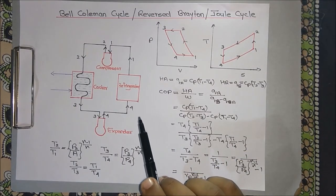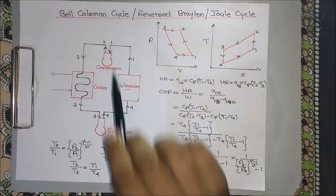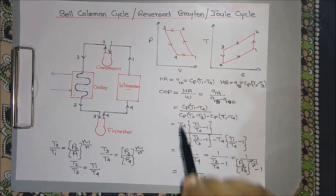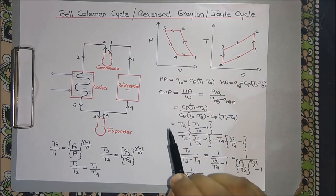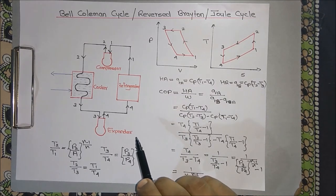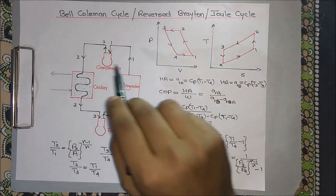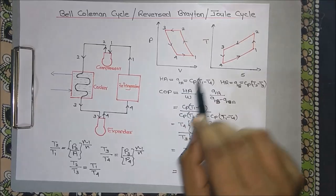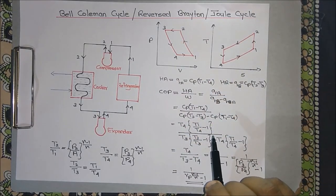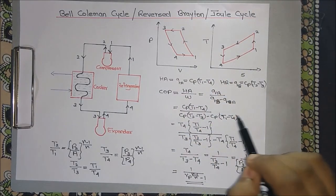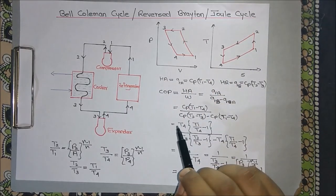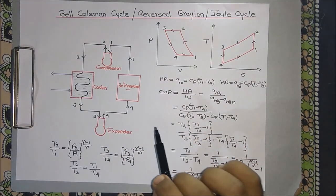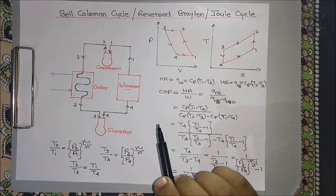Hello guys, today I am going to explain the Bell-Coleman cycle, also known as the reverse Brayton cycle or the Joule cycle. In this video I will explain the different components of a Bell-Coleman cycle, the processes involved, how to draw the PV as well as the TS diagram, and I will discuss the derivation of the COP of the Bell-Coleman cycle.